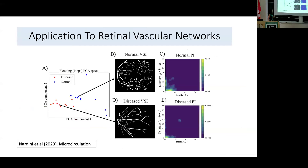We've done some extensions of this work, applying these methods to retinal images. Retinal vasculature fortunately tends to live in a more 2D world. We were able to show how we can partition retinal images using these descriptors, distinguishing healthy and diseased networks. There's a lot of scope to develop this further, though we need a much larger dataset to go further. But I think it's promising.